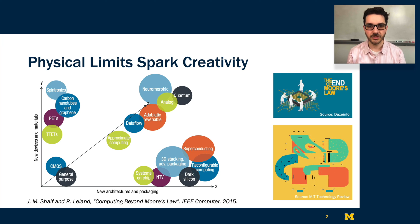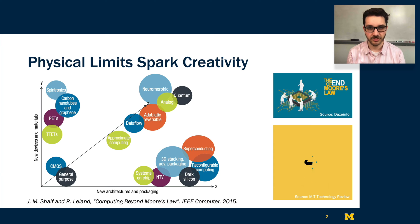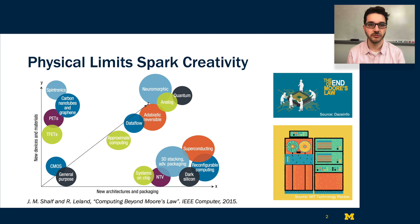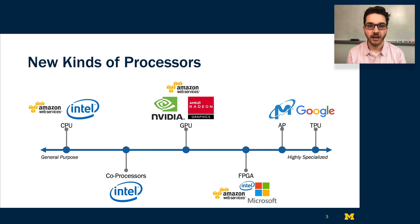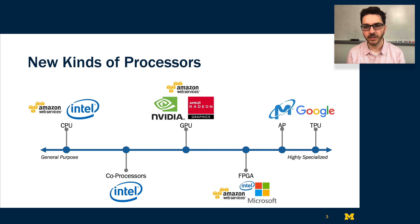In recent years, the physical limits of processor design have sparked some creative solutions to addressing increasing compute demands. In particular, hardware accelerators are seen as a viable path forward for tackling these increases. And we see many companies beginning to adopt highly specialized processors that trade off performance on general purpose applications to achieve very high throughputs for a specific set of applications.